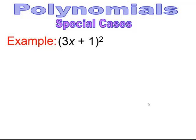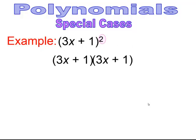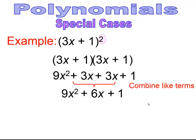Now for a special case: when you have a square on the outside of a binomial, it means you have two binomials — you cannot distribute the square inside. You must write the binomial twice and multiply it by itself. For example, (3x + 1)²: 3x × 3x = 9x², 3x × 1 = 3x, 1 × 3x = 3x, 1 × 1 = 1. Combining: 9x² + 6x + 1.